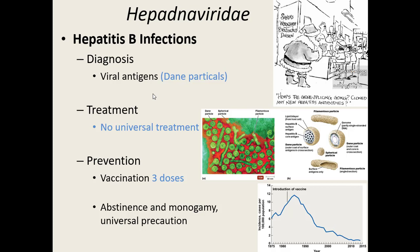Treatment: we don't have any universal treatment. We have various antiviral drugs that are moderately successful for some but not for everyone. The best thing is just not to get a hepatitis B infection — get vaccinated. It's a three-dose vaccine, and after development of the vaccine the number of hepatitis B cases went way down. Once you get all three doses, your immunity lasts for 20 years if not your entire life — a very effective vaccine. Other prevention: abstinence, monogamy, universal precautions, proper PPE, and disinfecting surfaces with bleach will all decrease your chance of picking up this virus.